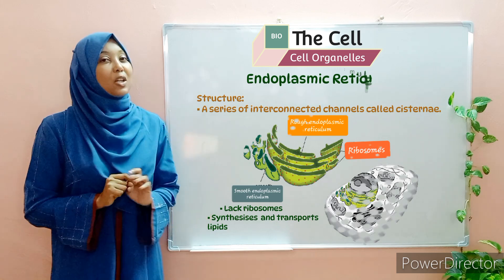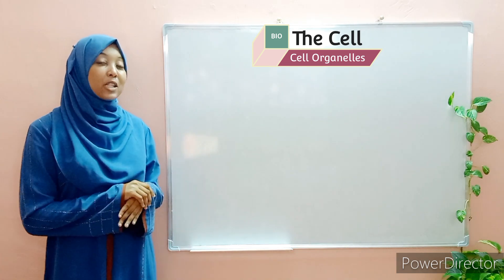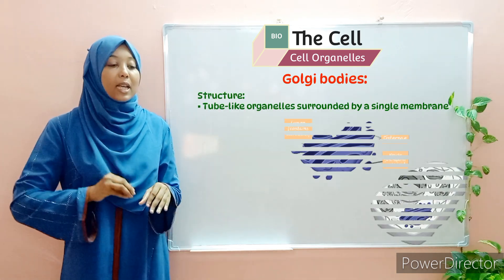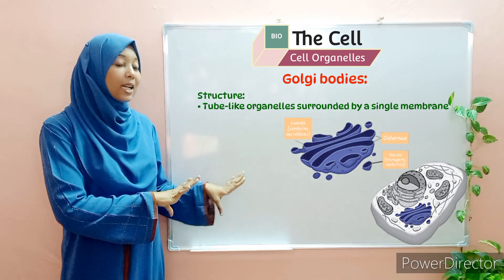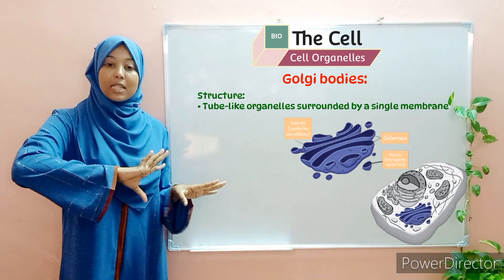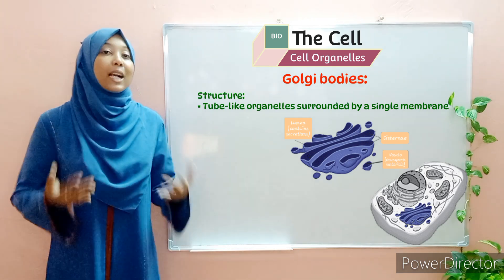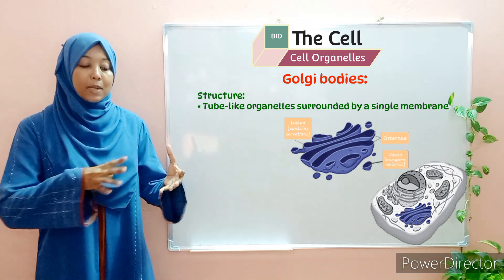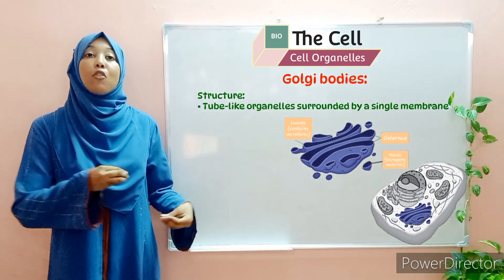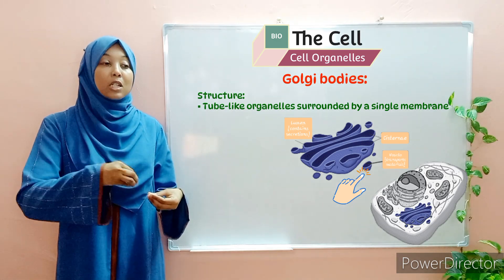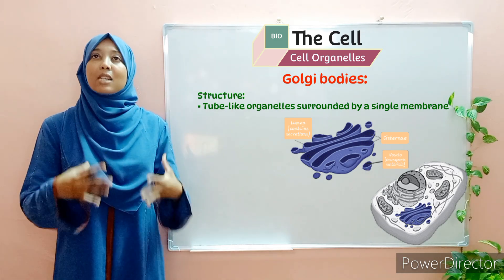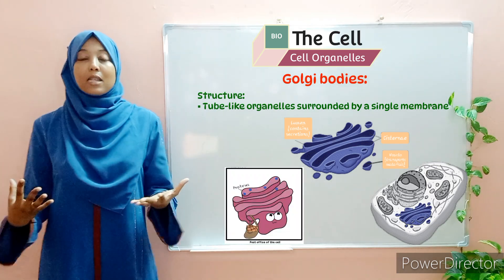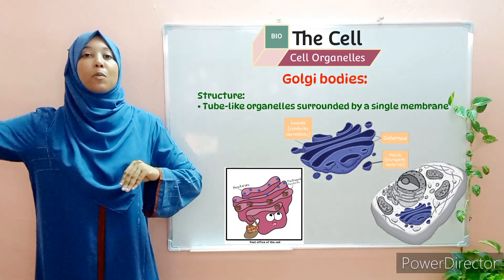Moving on to our next organelles — the Golgi bodies. Golgi bodies are tube-like organelles that contain cavities referred to as cisternae, surrounded by a single membrane. The cavities inside contain secretions of different sorts. Once the cavities are full, a part of the cavity breaks off forming a vesicle, and the vesicle then transports materials to different parts of the cell. Essentially, the Golgi bodies are like the postal service system of a cell — they receive materials and package them for transport.